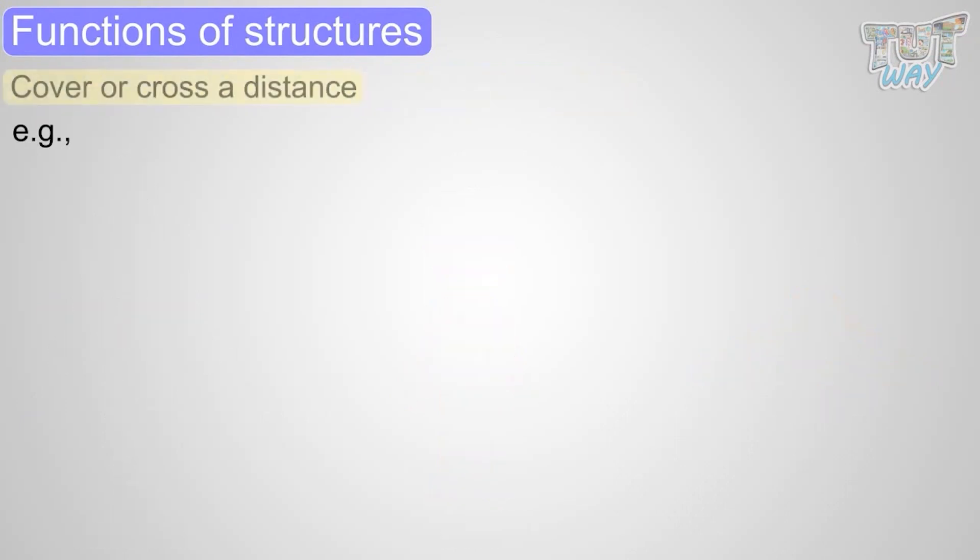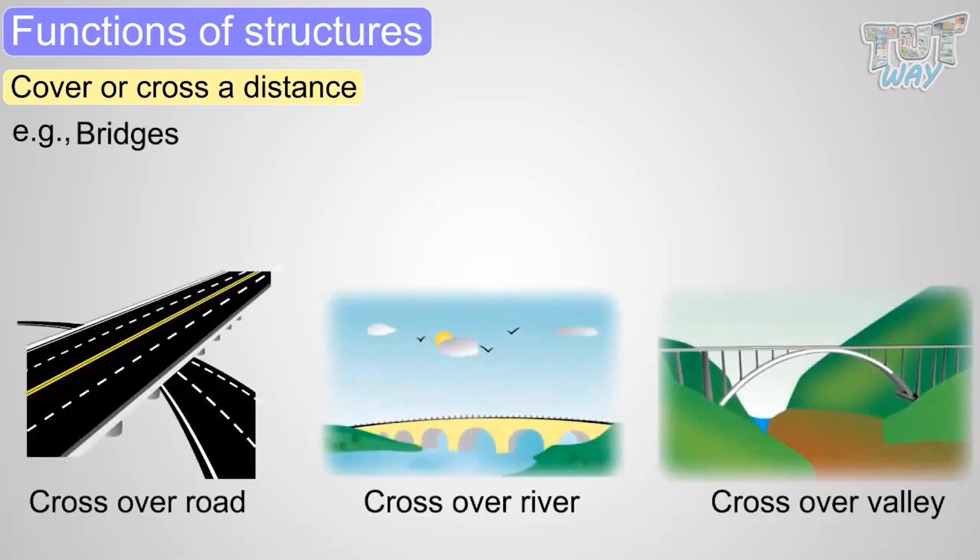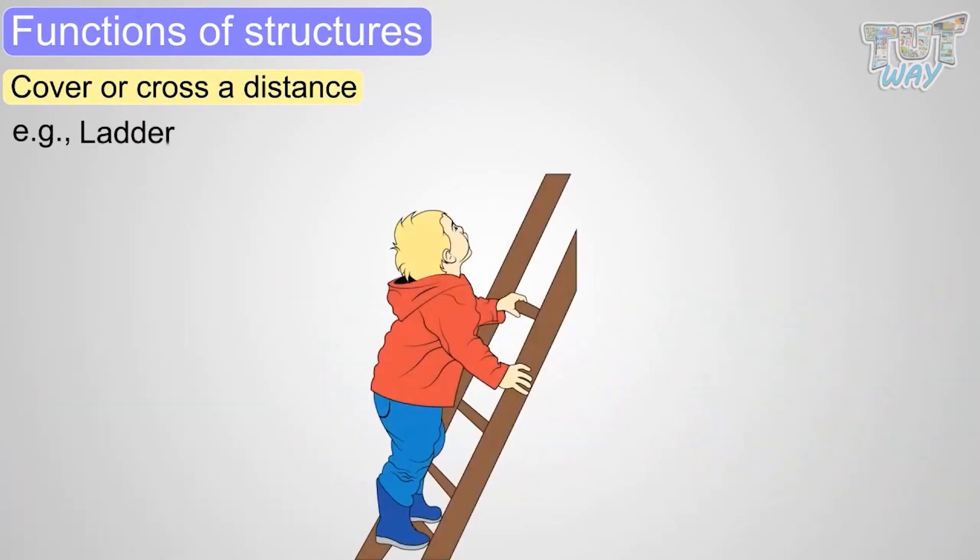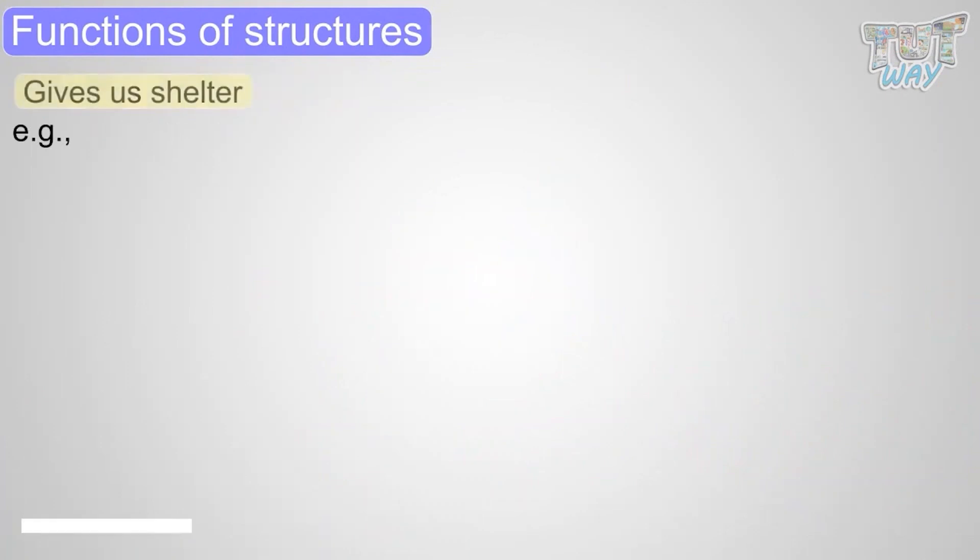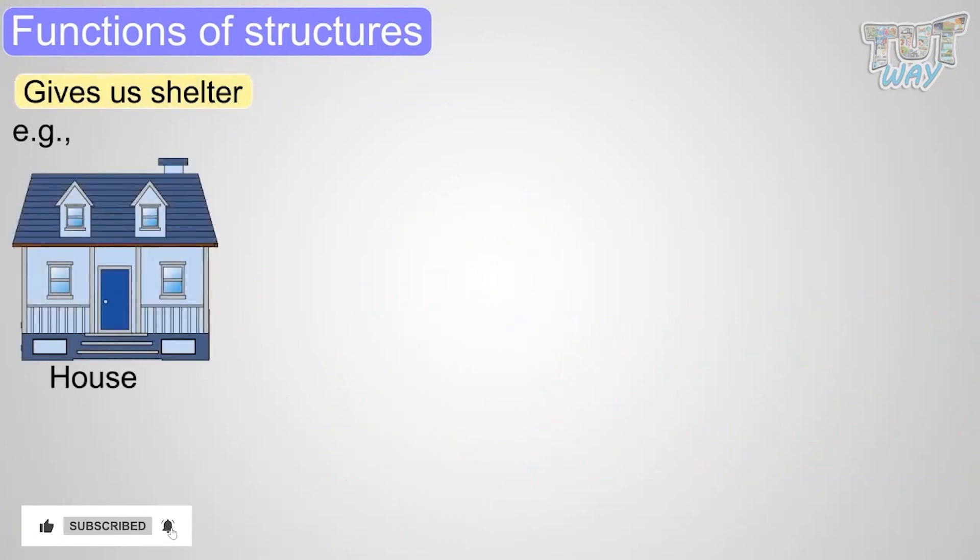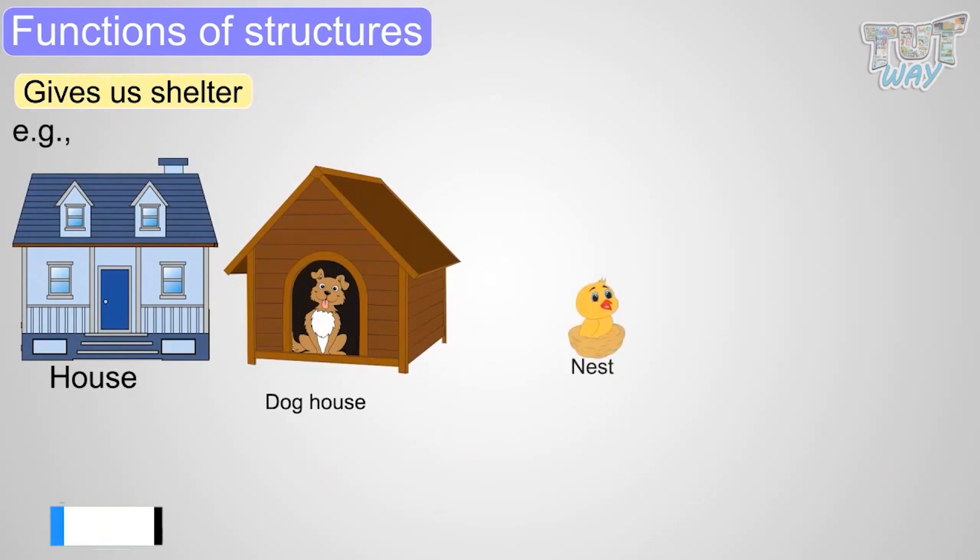Structures help to cover or cross a distance like a railway track, roads, bridges, or a ladder. We learned structures give us shelter like our houses, dog houses, nests, pen, or a coop.